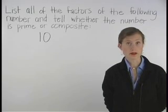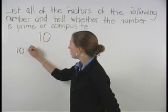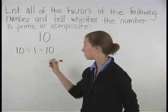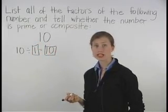To find the factors of 10, begin by dividing 10 by 1, which gives us 10. This tells us that 1 and 10 are factors of 10.